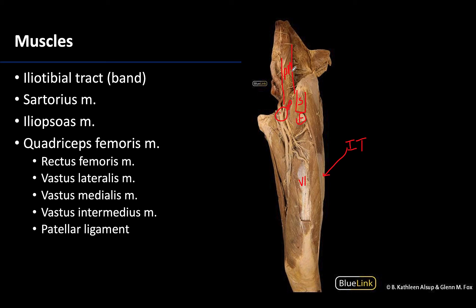Recall that the iliopsoas is formed by the iliacus as well as the psoas major - we discussed the psoas major when looking at the lumbar plexus, very close to the vertebral column. Those two muscles combine and distally attach to the lesser trochanter of the femur, at which point the muscle is called the iliopsoas. You can also see the vastus lateralis and vastus medialis here, and with the rectus femoris removed, the vastus intermedius is clearly visible.